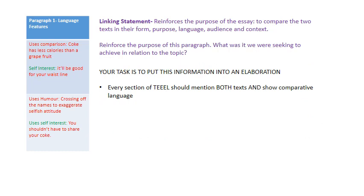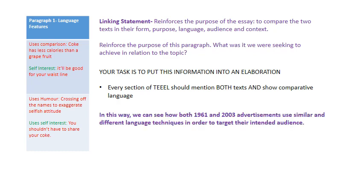For the linking statement, I'm really looking to just reinforce the purpose of the essay. I was asked to compare form, purpose, language, audience and context — so what do I want to do? My example is: 'In this way, we can see how both the 1961 and 2003 advertisements used similar and different language techniques in order to target their intended audience.' I haven't worked any miracles or magic there. I've just re-clarified what it was I had to do, specified that this paragraph is about language techniques, and shown that they used similar and different techniques with the purpose of targeting their intended audience. I just need to make sure I finish by bringing everything back into alignment.